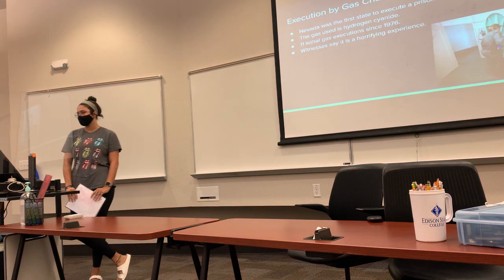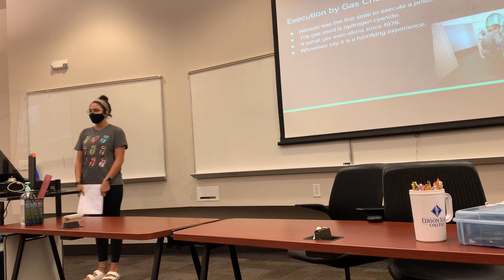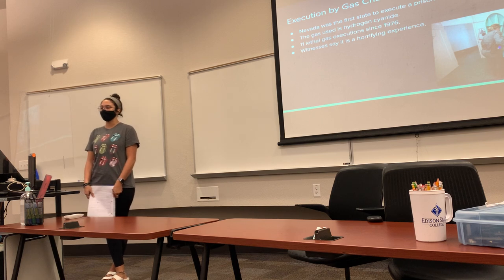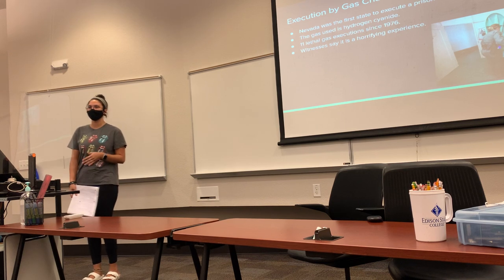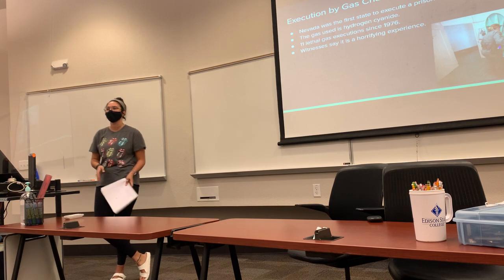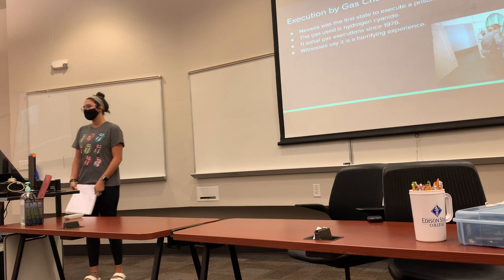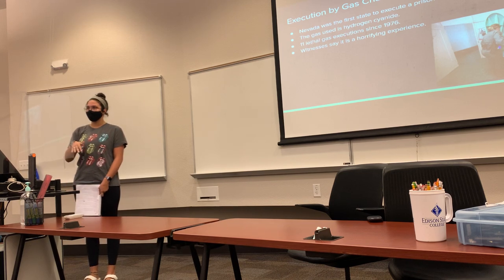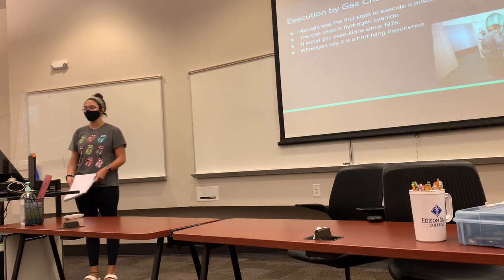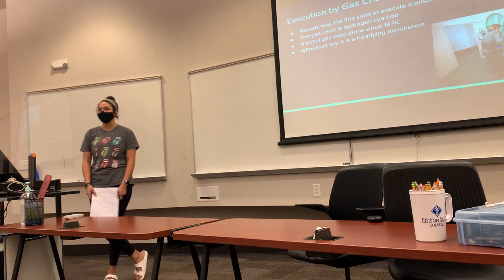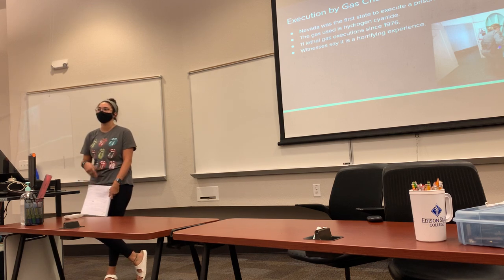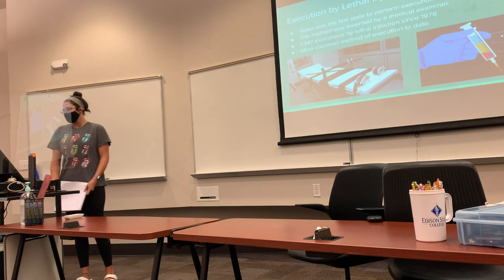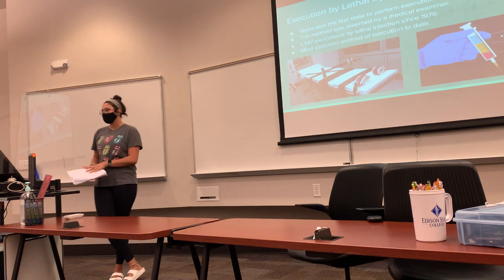The next is execution by gas chamber. Nevada was the first state to execute a prisoner by gas chamber in 1924 — his name was Gee Jon, and he was a gang member. They initially tried to execute him in his cell with gas, but realized the gas was leaking into the hallway, which is why they had to build a dedicated gas chamber. The gas used is hydrogen cyanide, which enters as sodium cyanide and turns into gas form when it hits a pan with liquid. There have been 11 lethal gas executions since 1976, and witnesses say it's a horrifying experience, as inmates are told to breathe as deeply as possible.